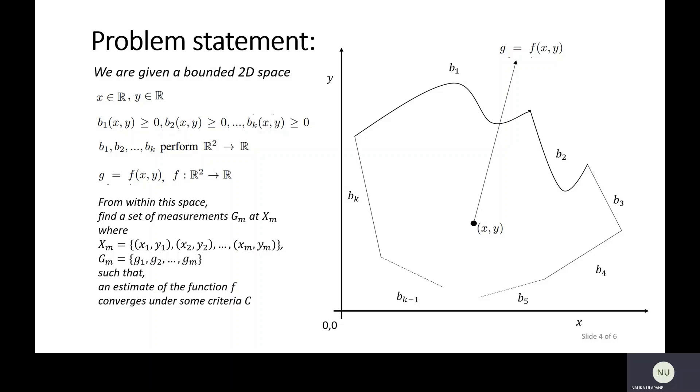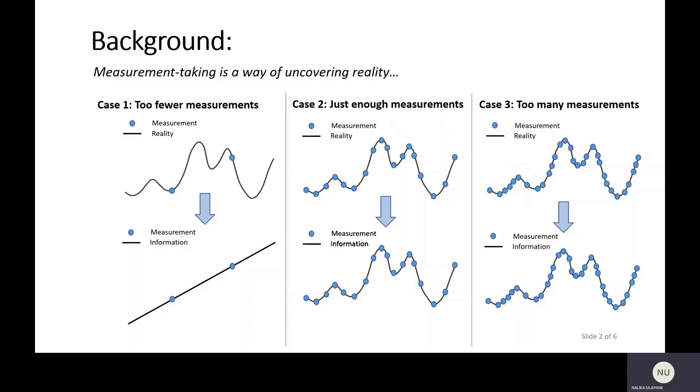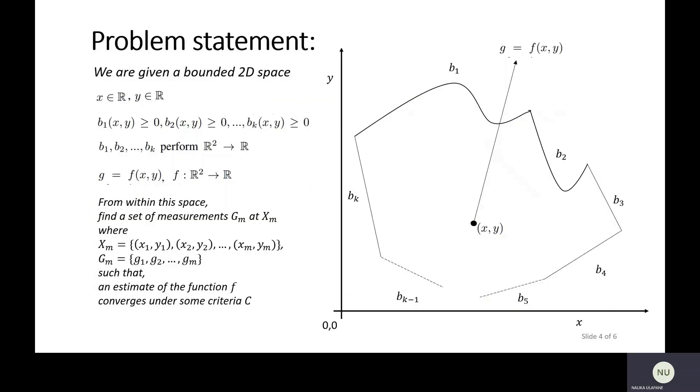This function F is the reality. If I go back to my example in the background, I have denoted a reality and a measurement here. The blue dot is the measurement and the black line is the reality. In the 2D case, the function F is unknown to us, and that function F is the reality. We are supposed to uncover that function F through measurements, measuring G against X and Y. We are supposed to capture a set of measurements just about enough to estimate F, and the estimate of F should converge under some convergence criteria C. That is the simple mathematical representation of the problem we are trying to solve in this paper.